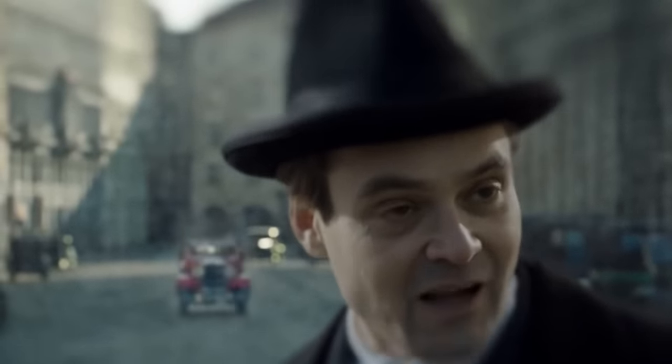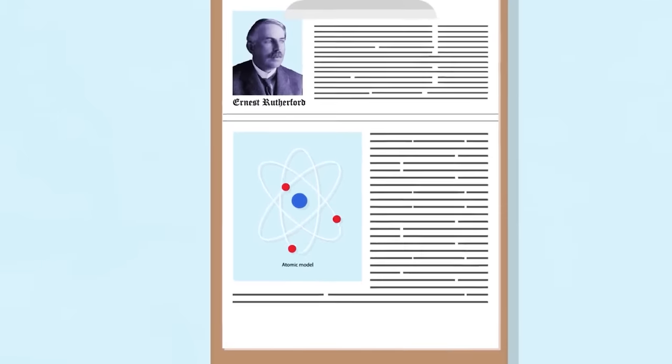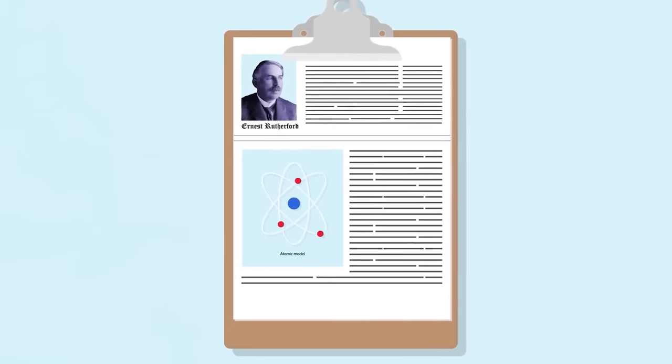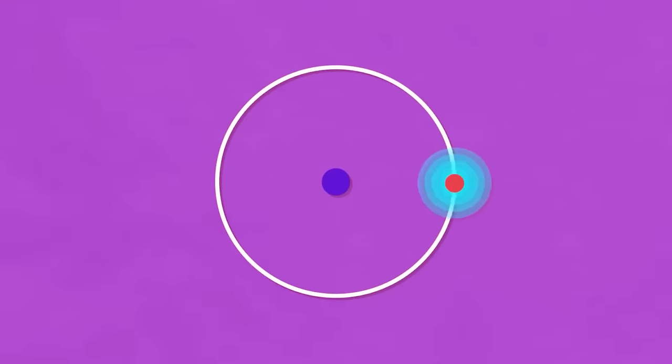Niels Bohr, a highly regarded physicist from Denmark, stepped into the scene as the pioneer in resolving the perplexities surrounding electrons' behavior in atoms. It was in the year 1913 when he presented a groundbreaking idea. Electrons in an atom aren't just randomly spinning around. Instead, they are restricted to specific quantized distances from the nucleus.